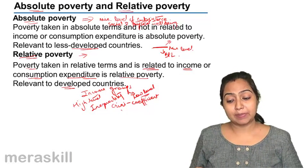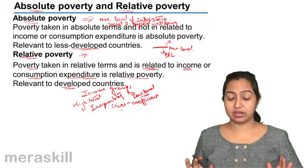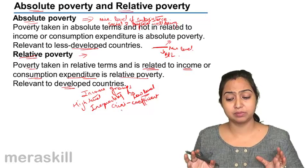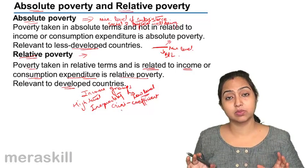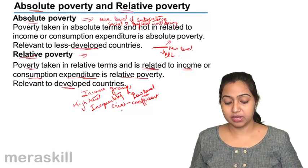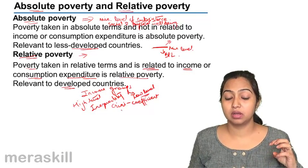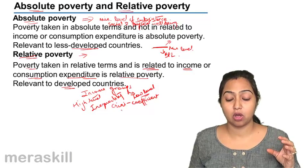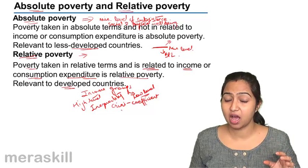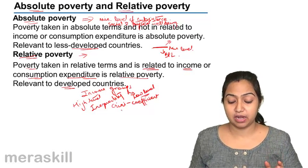So now we know what absolute and relative mean. Absolute means the minimum level of subsistence is not attained by the people. Relative means people are poorer in comparison to others. Absolute poverty is more prominent and useful when measuring poverty in less developed countries like ours, while relative poverty is more appropriate for developed economies.